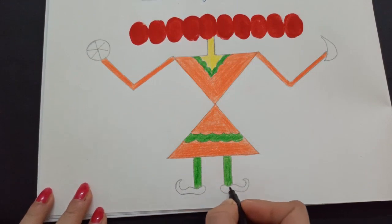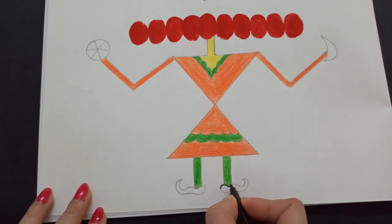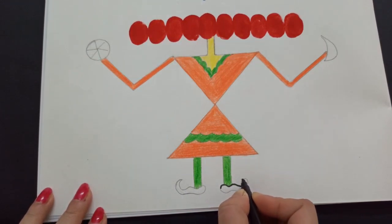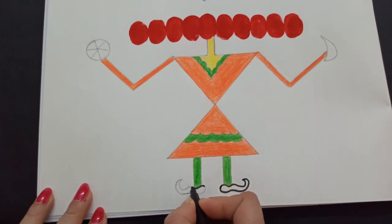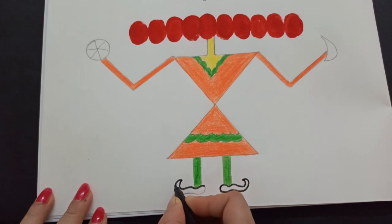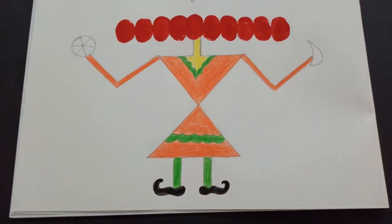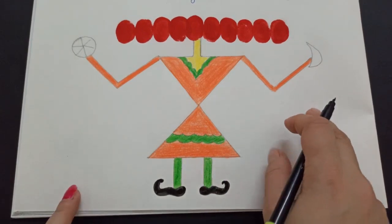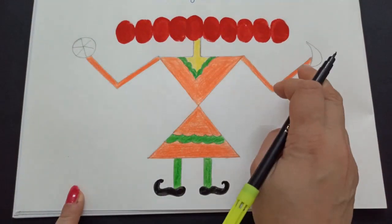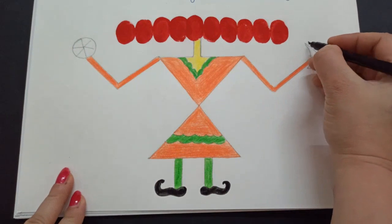Now, we will color Ravan's shoes with black sketch pen. Let's make it up. We will color the weapons in red color.